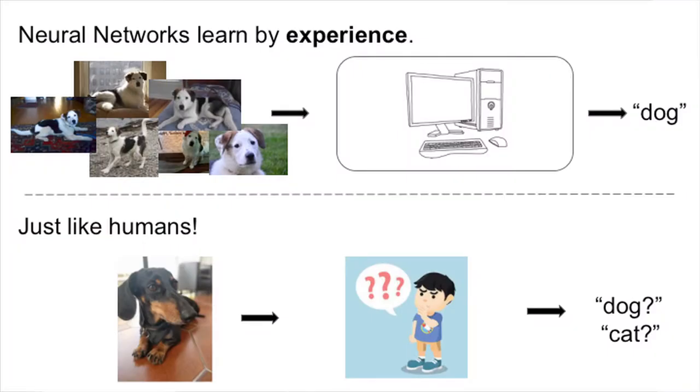For example, we'd say: here's an image, that's a cat; here's another image, that's a dog. After seeing all those images, the neural network will be able to understand what makes a dog a dog and what makes a cat a cat, without us ever actually defining what it is.